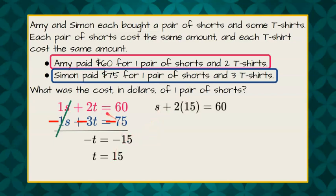So let's take this 15 and replace it in the first equation for t. So s plus 2 times 15 equals 60. 2 times 15 is 30.